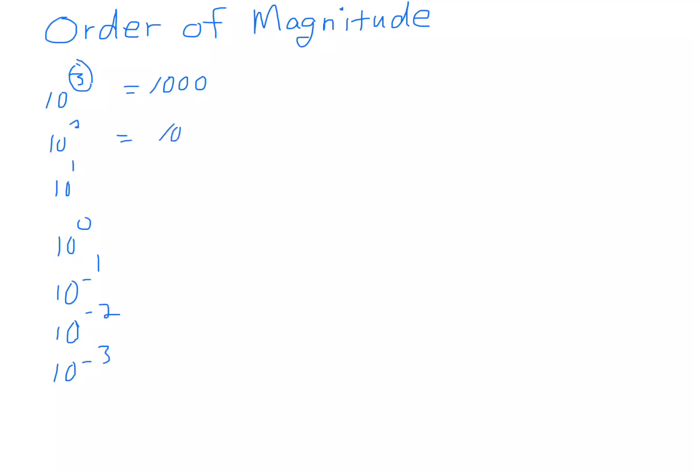Order of magnitude of 2 is 100. Order of magnitude of 1 is 10s. Order of magnitude of 0 is the 1s. Then we have the 0.1, we have the 100ths, and we have the 1,000th place.